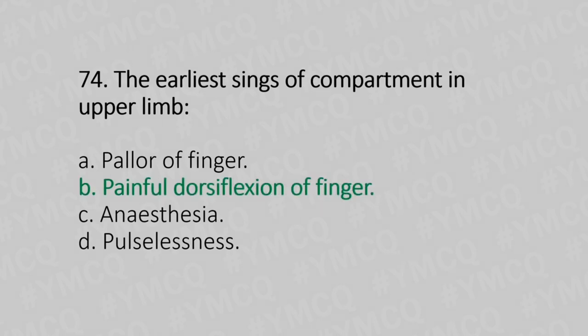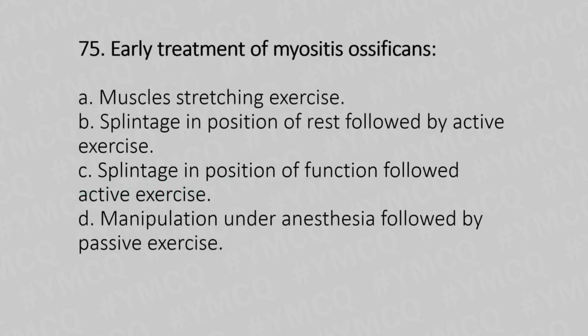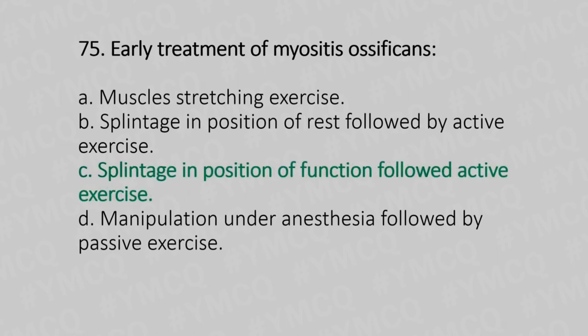Now let's move to question number 75. Early treatment of myositis ossificans. Option A: muscle stretching exercises. Option B: splintage in the position of rest followed by active exercise. Option C: splintage in position of function followed by active exercise. Option D: manipulation under anesthesia followed by passive exercise. And the answer is Option C, splintage in position of function followed by active exercise.